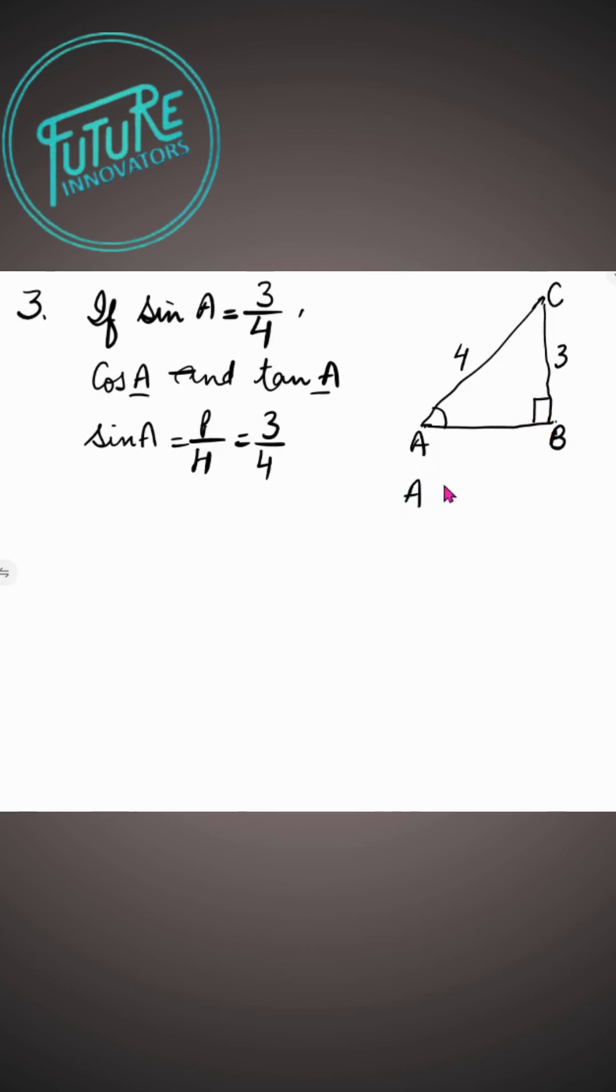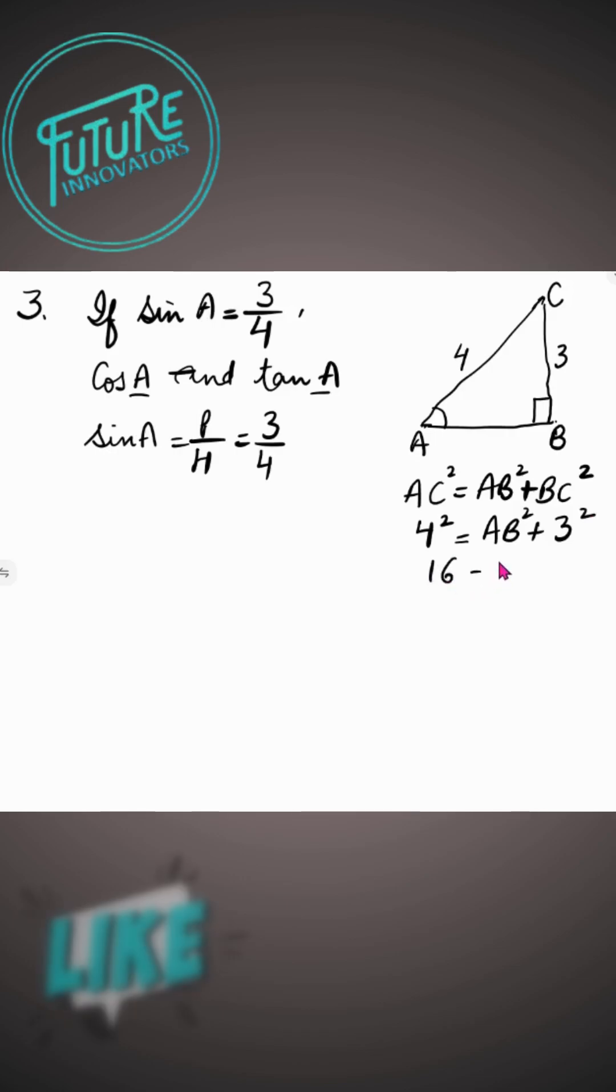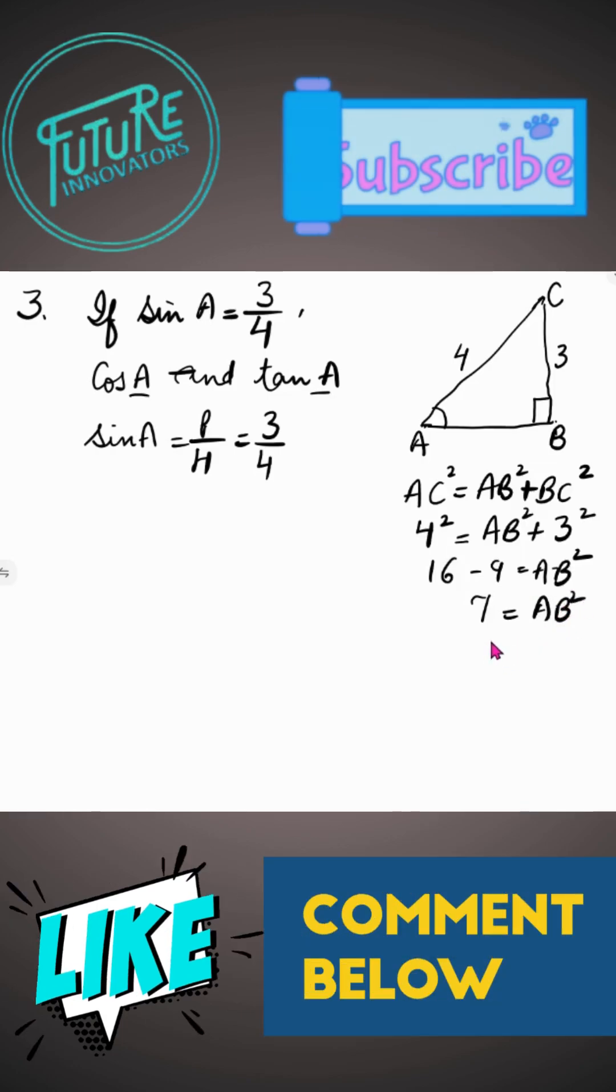So first, let's start with Pythagorean theorem. AC square is equal to AB square plus BC square. AC is 4, 4 square, and AB square plus BC is 3 square. 16 minus 9 is equal to AB square. Now this is equal to 7. So here AB is root 7.